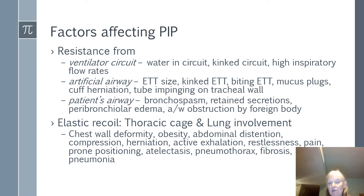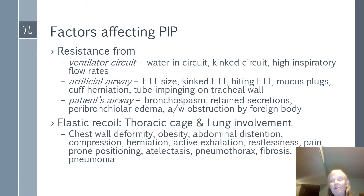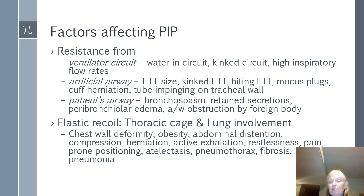We had a patient with false vocal cords who was intubated into them. Every afternoon he had problems. The physician went in with a bronchoscope and showed us where the tube was sitting in the false vocal cords. Patient airway issues such as bronchospasm, bronchoconstriction, retained secretions, edema, and foreign body obstruction will also increase PIP.